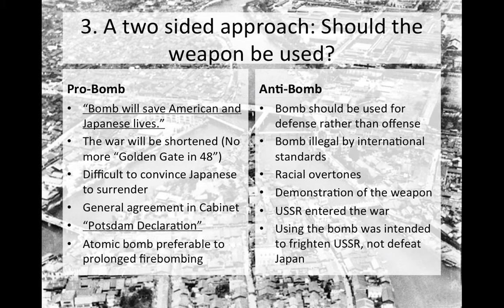The second pro-bomb argument was the Potsdam Declaration of 1945, where effectively the Allies had warned Japan and hinted that they possessed an atomic weapon, and that Japan should surrender before the weapon would be used. Therefore, because Japan did not surrender, one can justify the usage of the bomb.